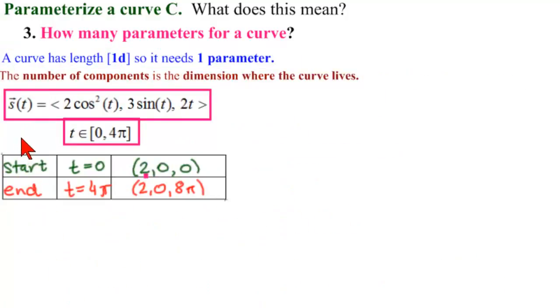So remember that what we want to do is graph this cool curve, and we saw there was a curve because it has one parameter, and it's a curve in space because it has three components, and its start point is (2, 0, 0). Its end point is (2, 0, 8π). So let's look at it.